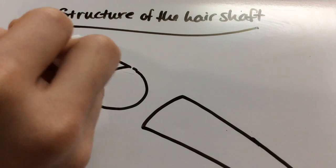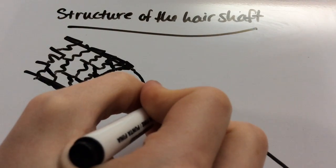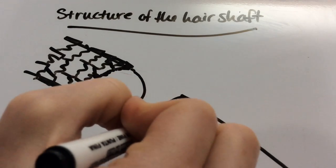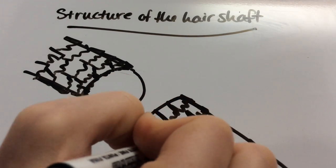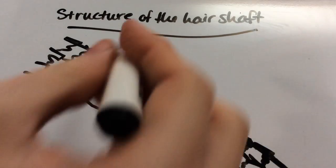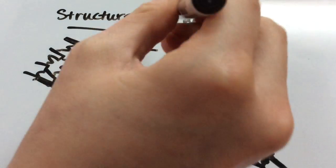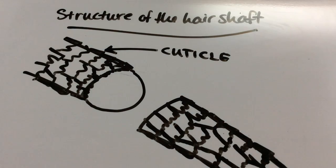What I'm drawing here is the cuticle layer - the outermost layer of the hair. They're often referred to as shingles on a roof. They lay over top of one another and provide a barrier that protects the inner structure. The cuticle is responsible for creating the shine and smooth, silky feeling of healthy hair.